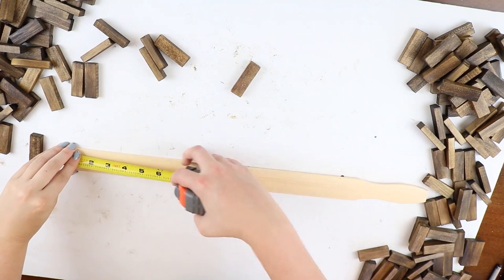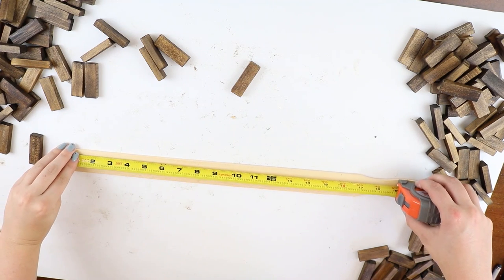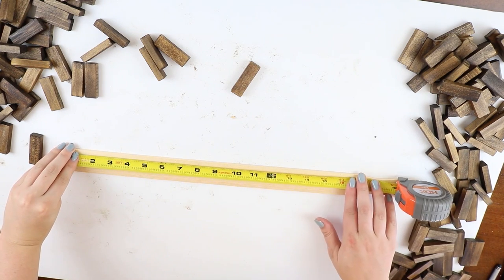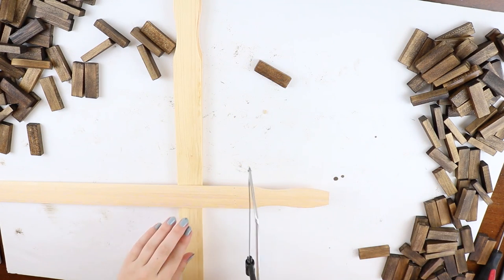After making your mark, you're going to want to measure where exactly you had that line. Mine ended up being around 16 inches, and that's where I cut each stir stick.